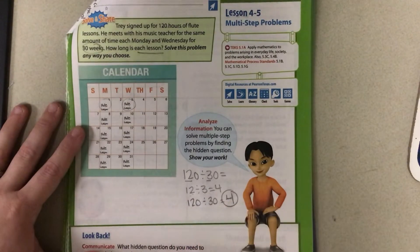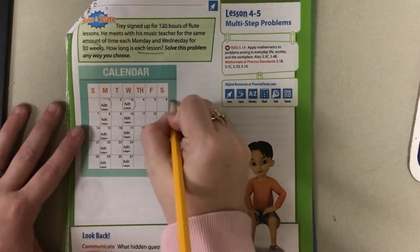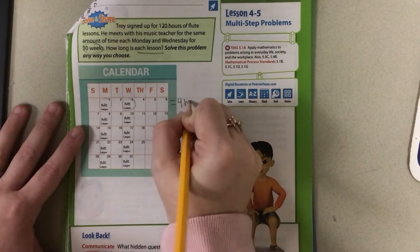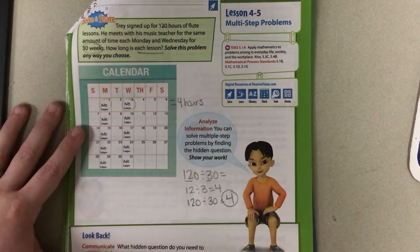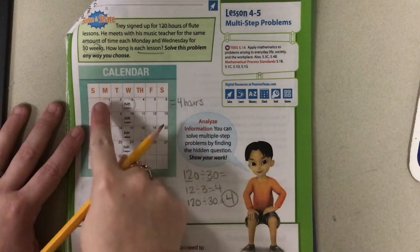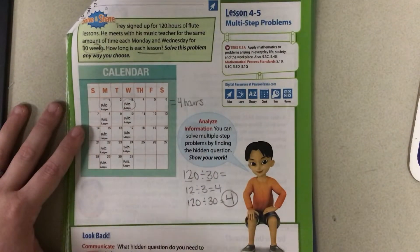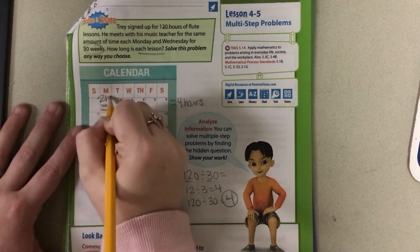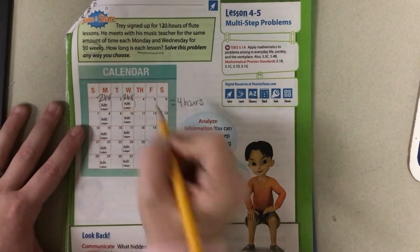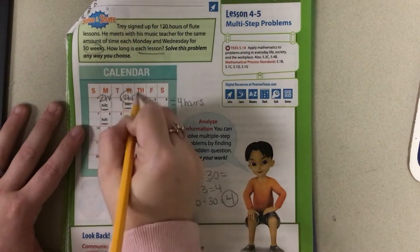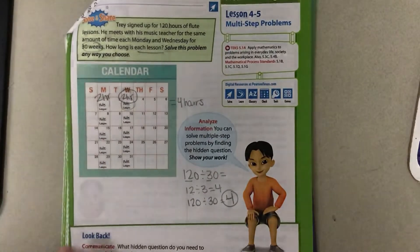So my answer is 4 per week. So this whole week is 4 hours. So if it's 4 hours for this week, how much is it per lesson? Good. So our answer is going to be 2 hours for each lesson.